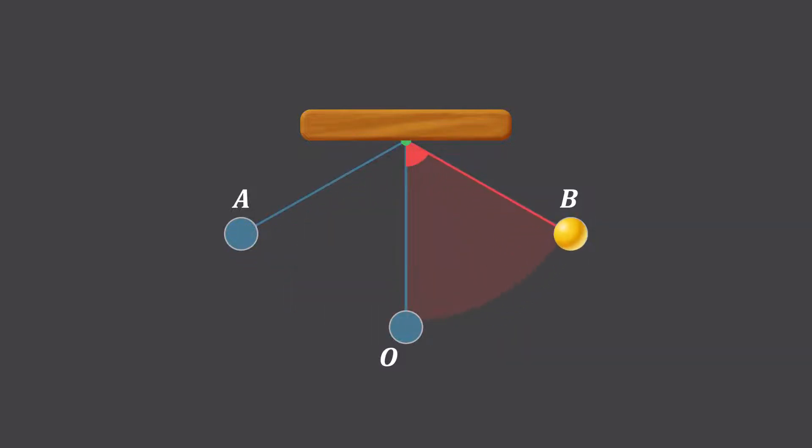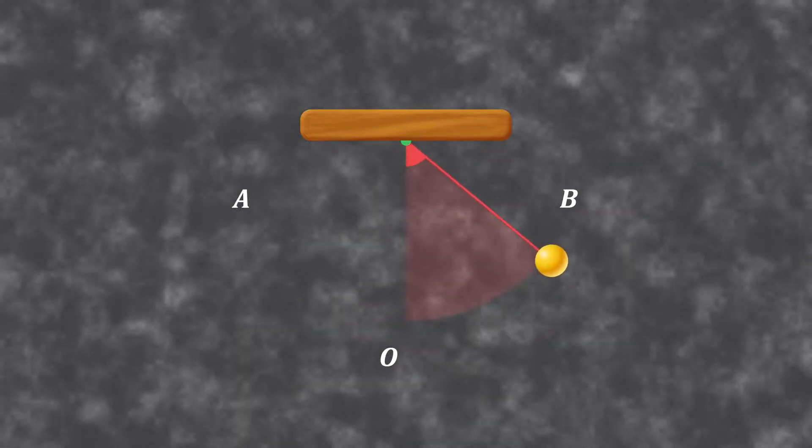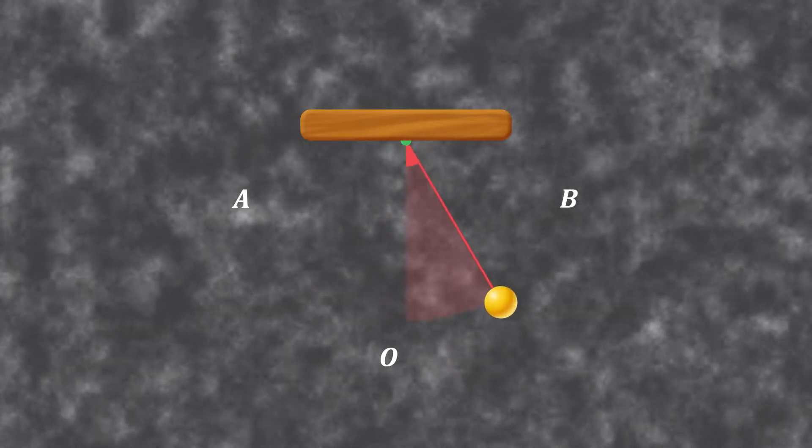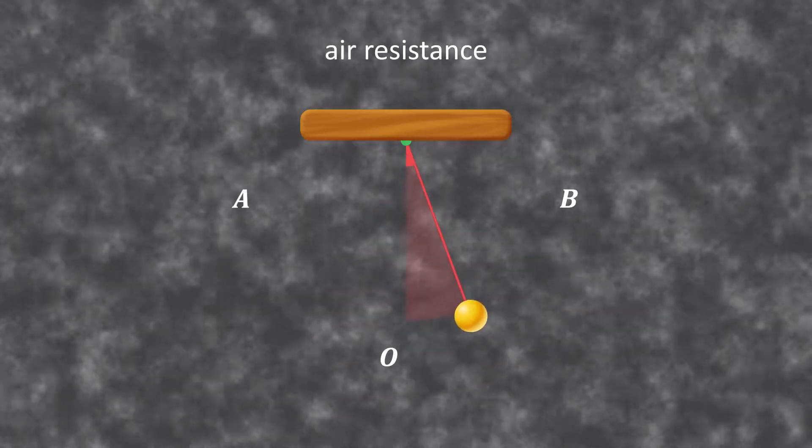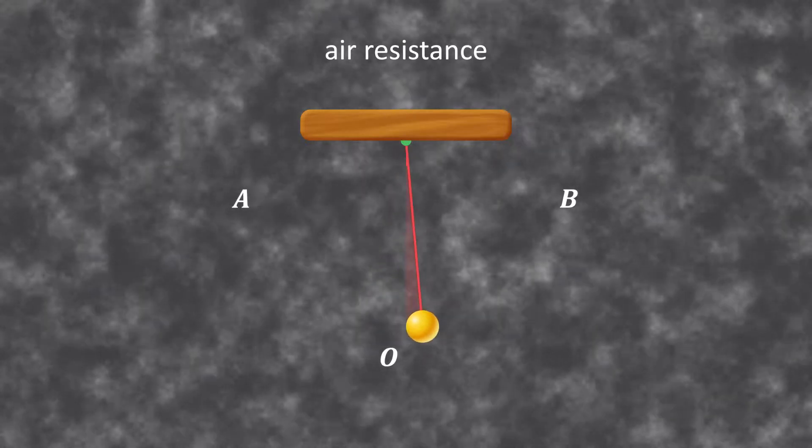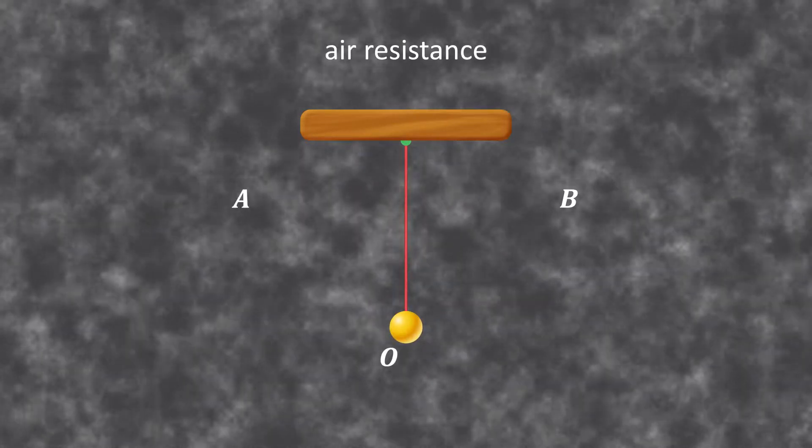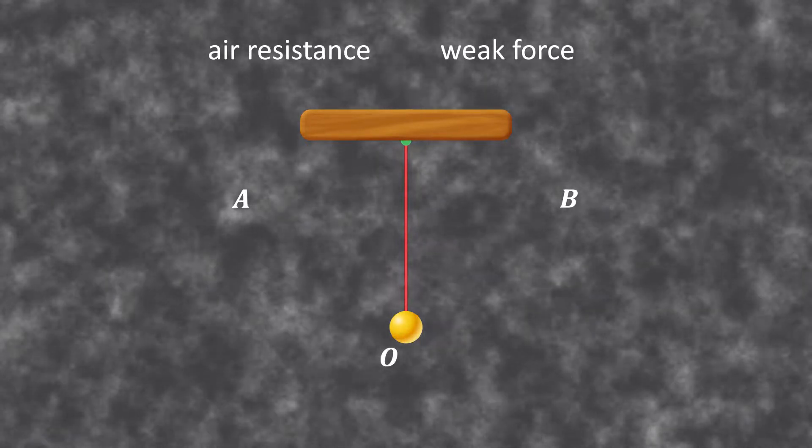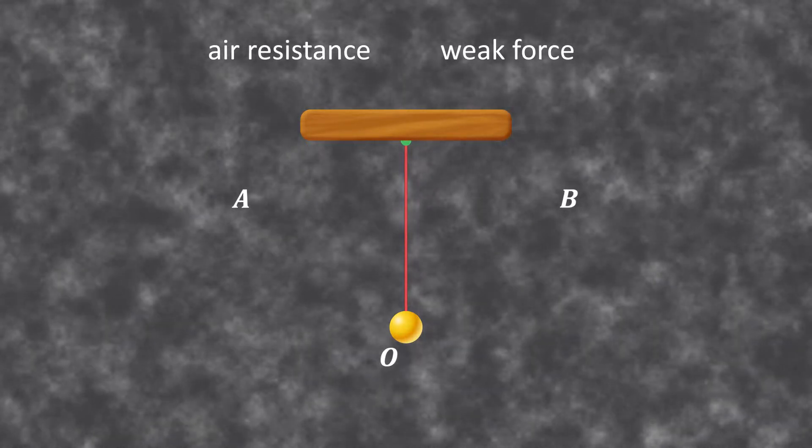This will go on forever if the pendulum is placed in a vacuum. If it's not, a third force opposes this oscillatory motion of the bob between A and B. This force is air resistance or friction, which will eventually make the bob come to a stop at the mean position O. This air resistance is a very weak force and so we shall ignore it for the time being.